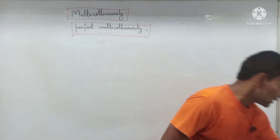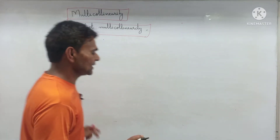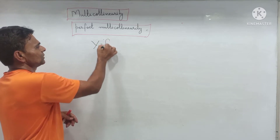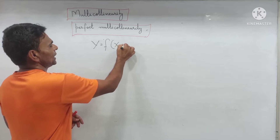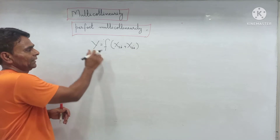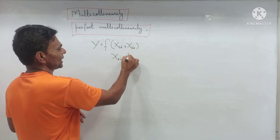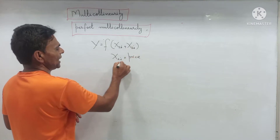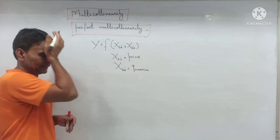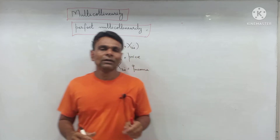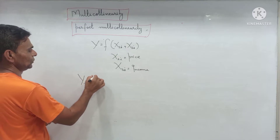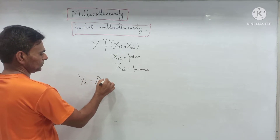Now consider a regression model. Suppose Y is the quantity demanded, which is a function of two variables X2 and X3, plus a disturbance term.